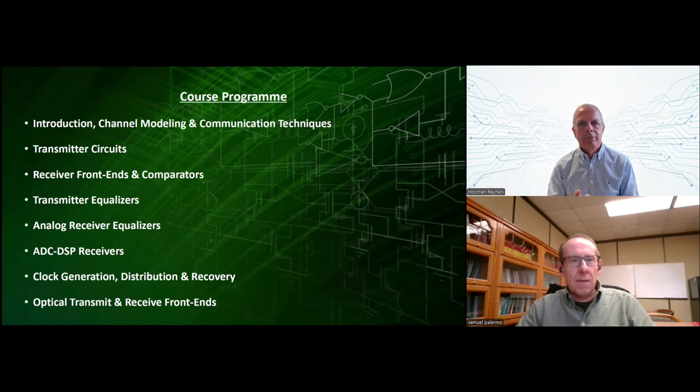So at a high level, what we're going to do is first look at how these transceivers are architected to operate above 200 gigabits per second to handle the high channel loss at the effective Nyquist frequency, the stringent clock jitter specifications that we have to deal with.